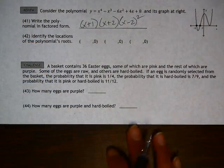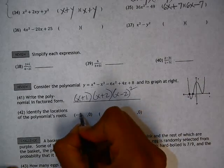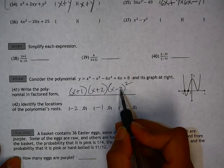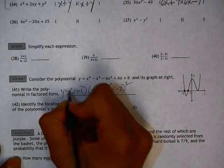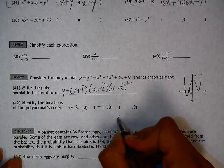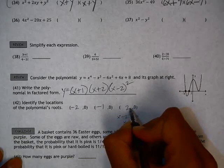Then the last question is, identify the locations of the polynomial's roots. We already are given two of the roots, negative 2, 0, and negative 1, 0. The other root would be when x minus 2 is equal to 0. So that would be when x equals 2, or the point 2, 0.